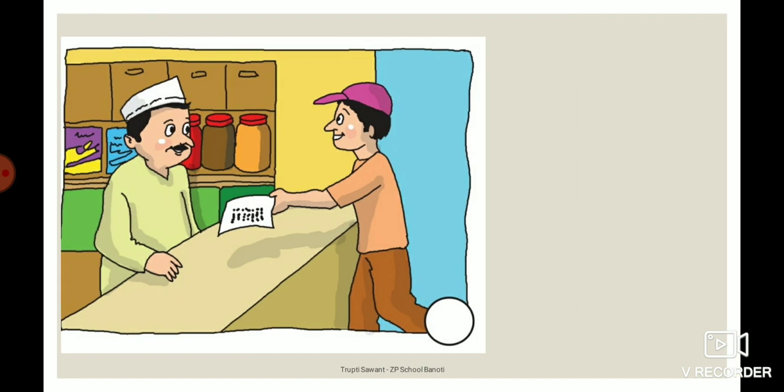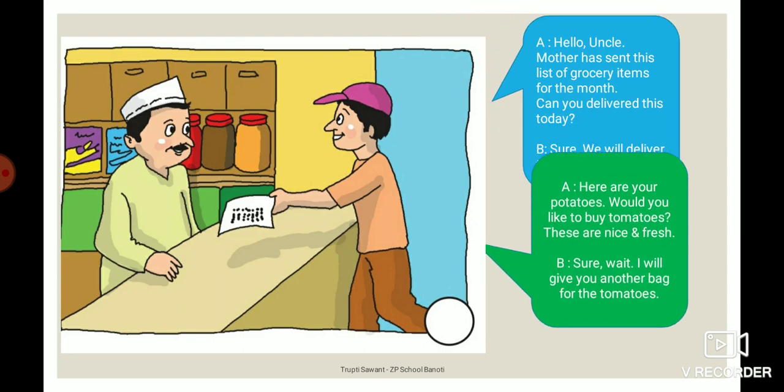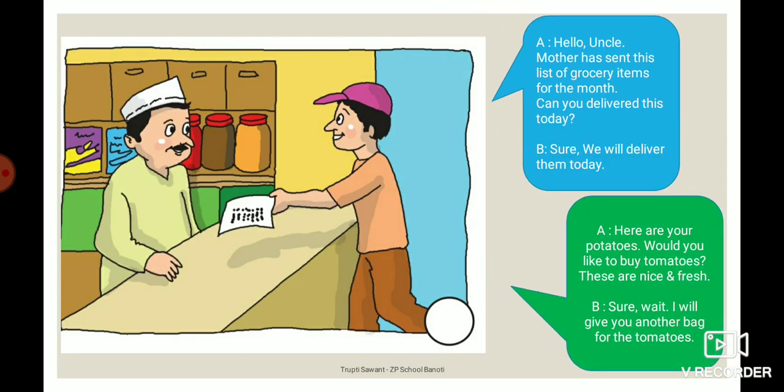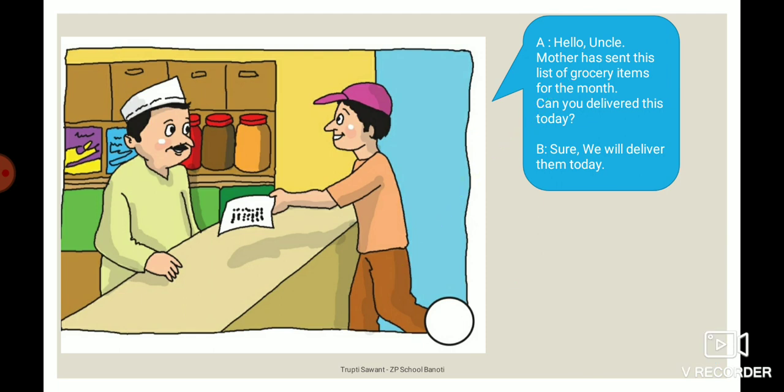Here is also one picture and you have to find out which is the correct conversation — first or second? First — very good, correct. Here A says, 'Hello uncle, mother has sent this list of grocery items for the month. Can you deliver this today?' B says, 'Sure, we will deliver them today.' This is the suitable conversation for this picture.